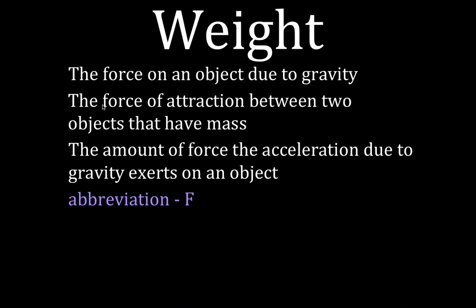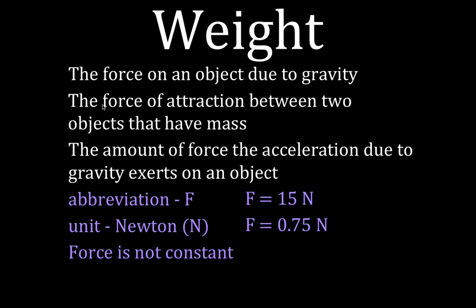When we abbreviate weight, we usually don't use a W because W is for work. So it is a force, so we use F. F is the symbol for force. And it's measured in newtons, Sir Isaac Newton. The abbreviation for the newton is an N. For example, the force of attraction or the weight of an object is 15 newtons or 0.75 newtons. The force is not constant. It does depend on your location.